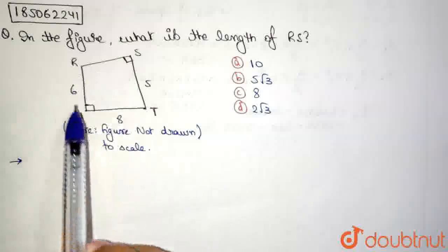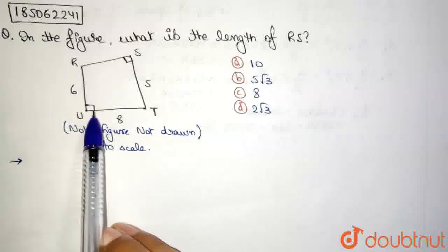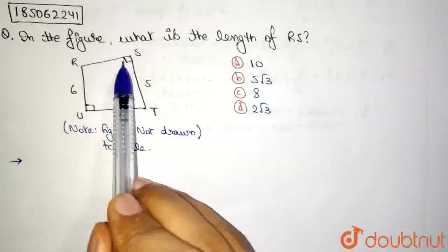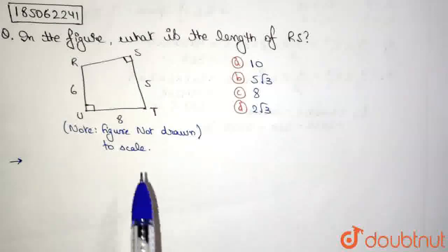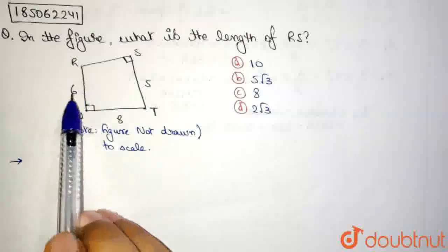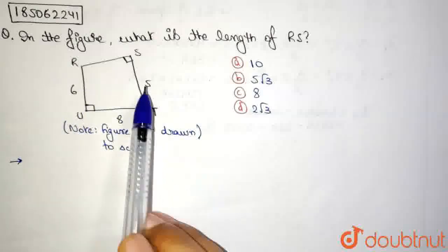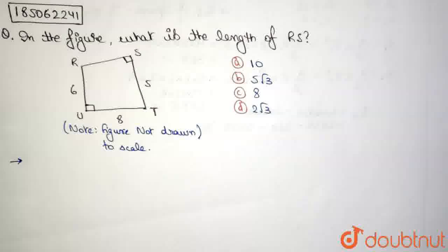Now, if we look at this figure, this angle is 90 degrees, which is angle U. And this angle is 90 degrees, which is angle S. And we have the length of 3 sides. RU is 6, UT is 8, and ST is 5. So let us write that down first.